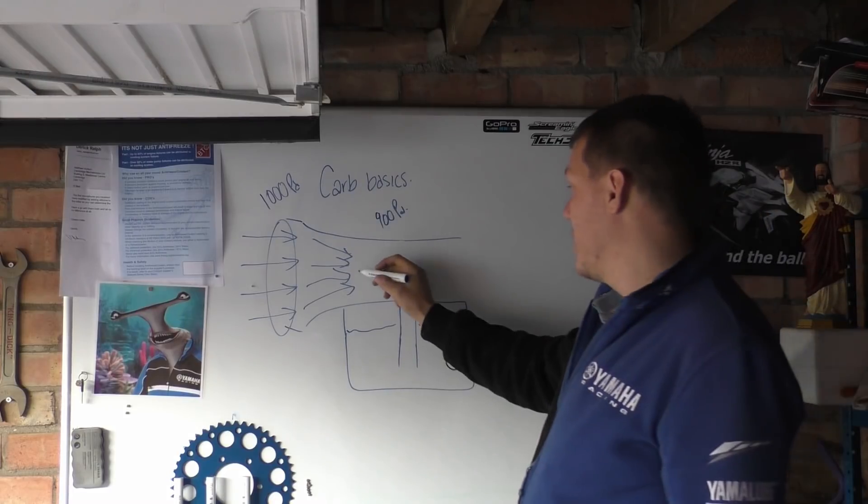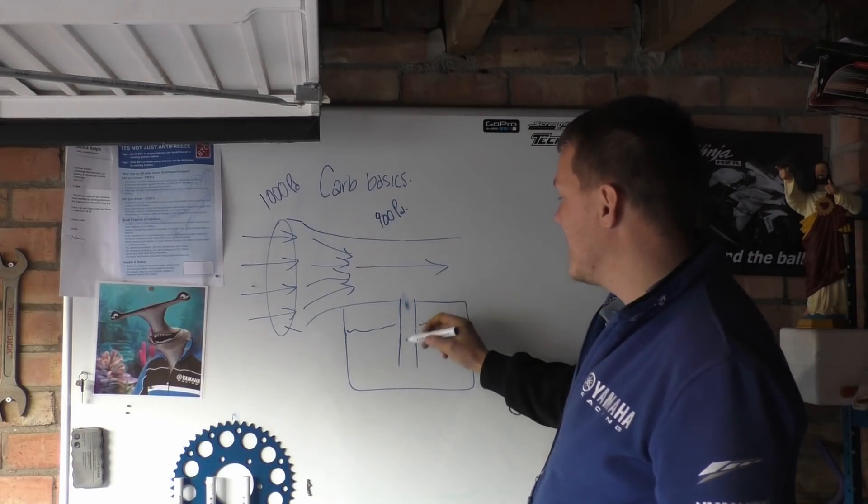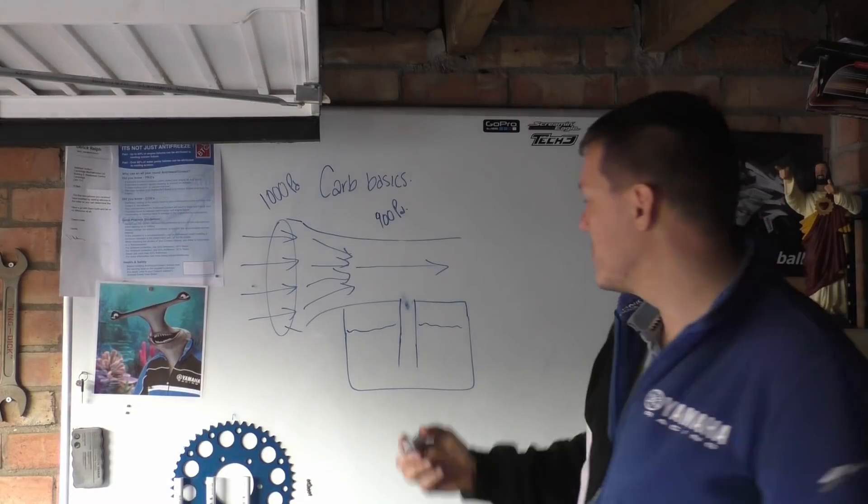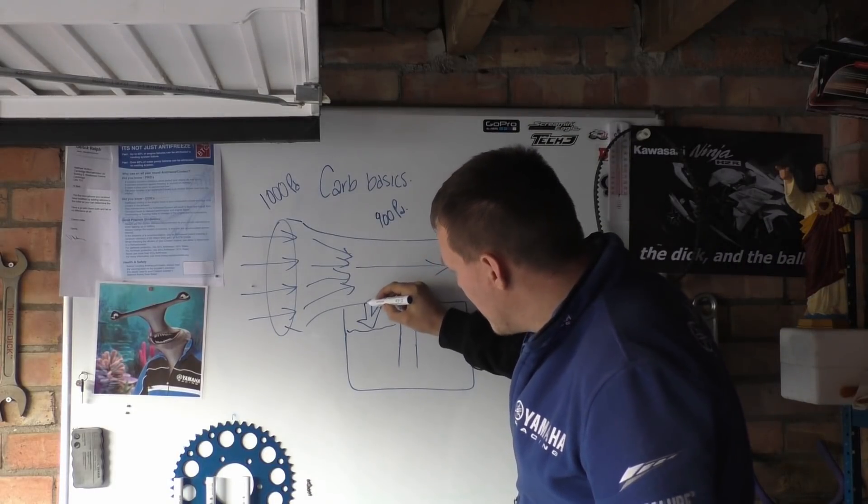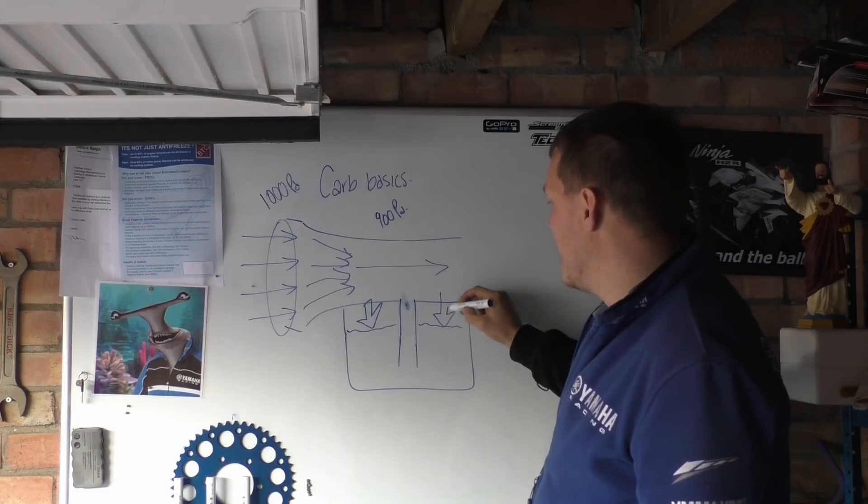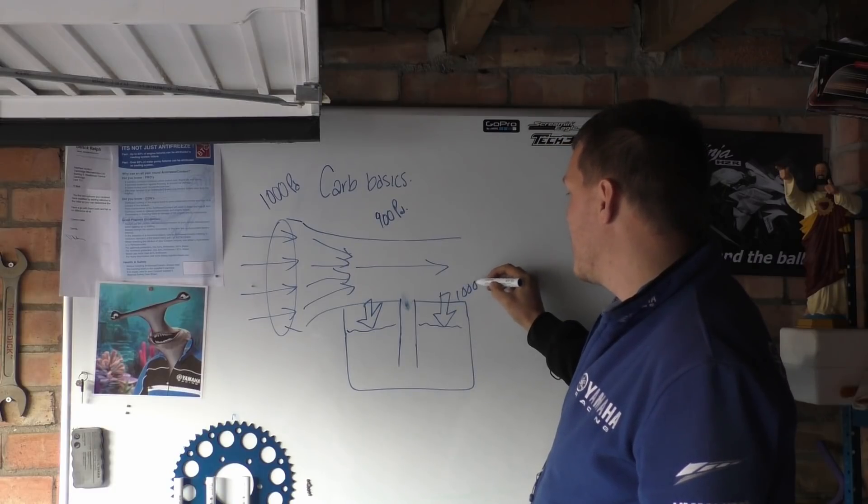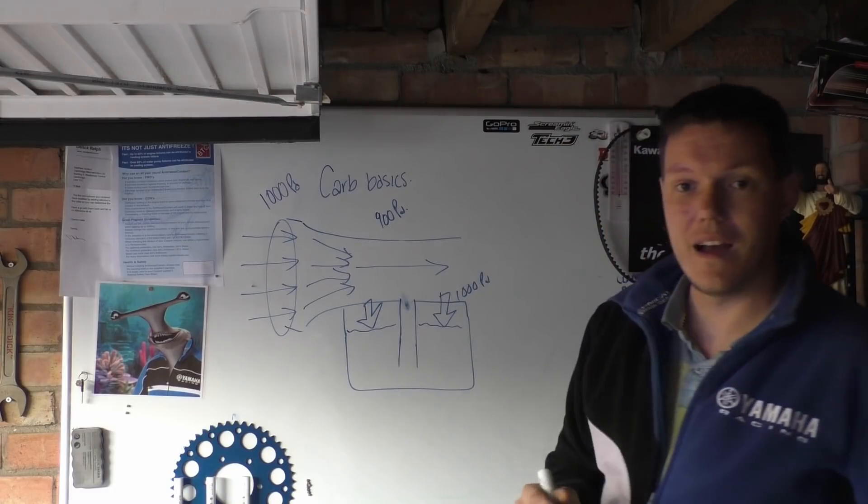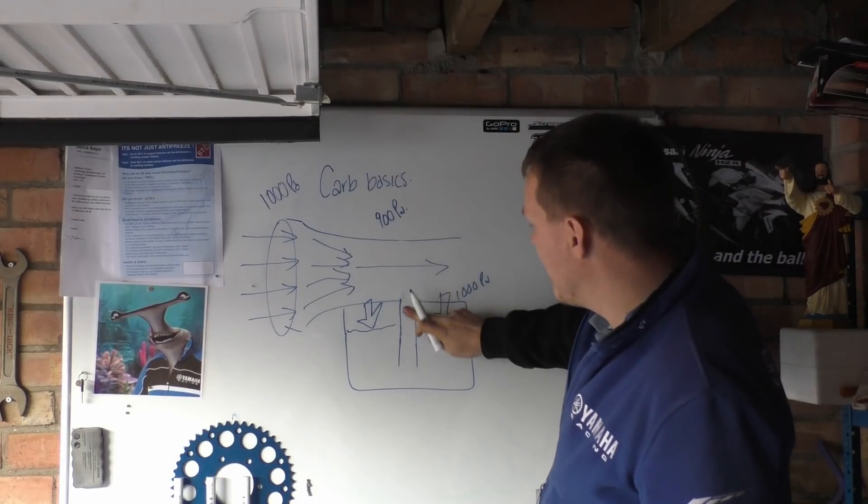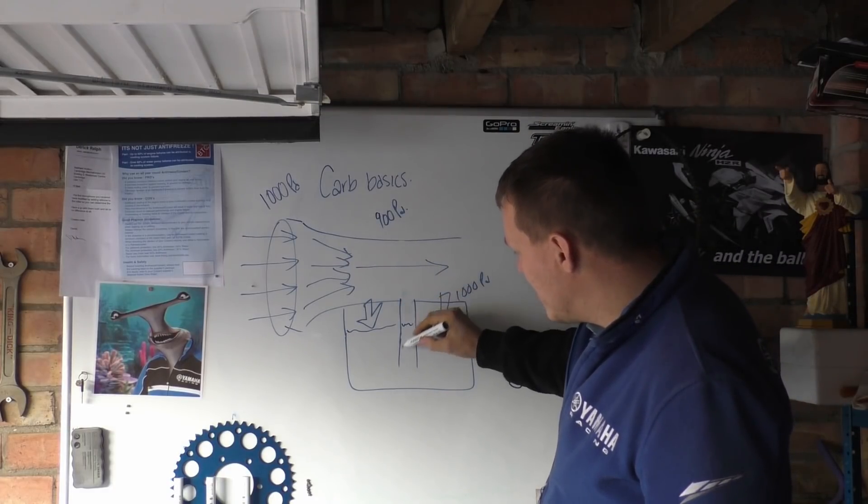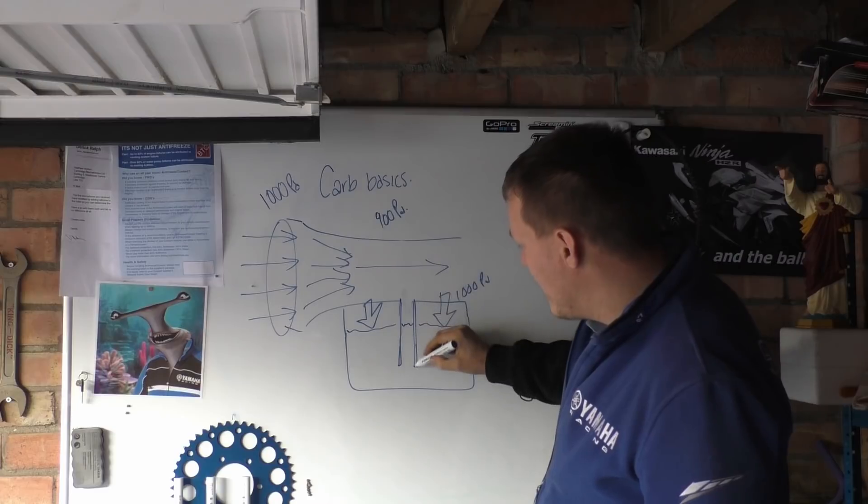As this lower pressure air flies past, the pressure drops. Now, the pressure being applied to the fuel in the fuel bowl is a thousand pascals like that. And the pressure keeping the fuel inside this tube here is 900.